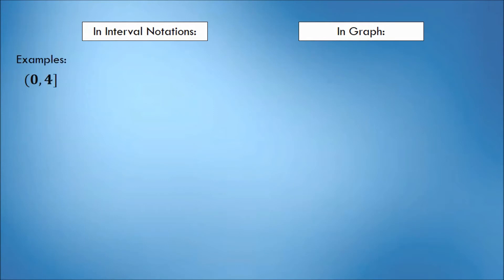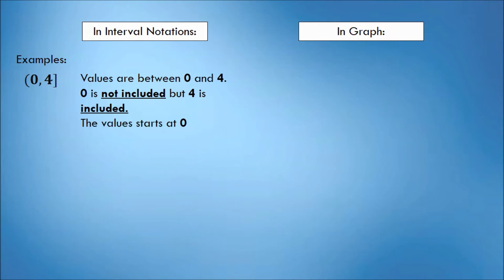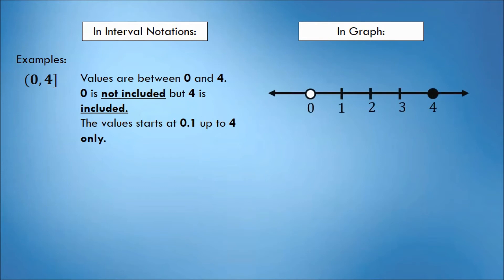Another example: we have the interval (0, 4]. This interval indicates that the values included are between 0 and 4. 0 is not included because of the parenthesis symbol, but 4 is included because of the bracket symbol. Meaning, the value starts at 0.1 up to 4 only. In the graph, we will put a hollow circle on 0 because 0 is not included, and a shaded circle on 4 because 4 is included. The solution set is from 0.1 up to 4 only.